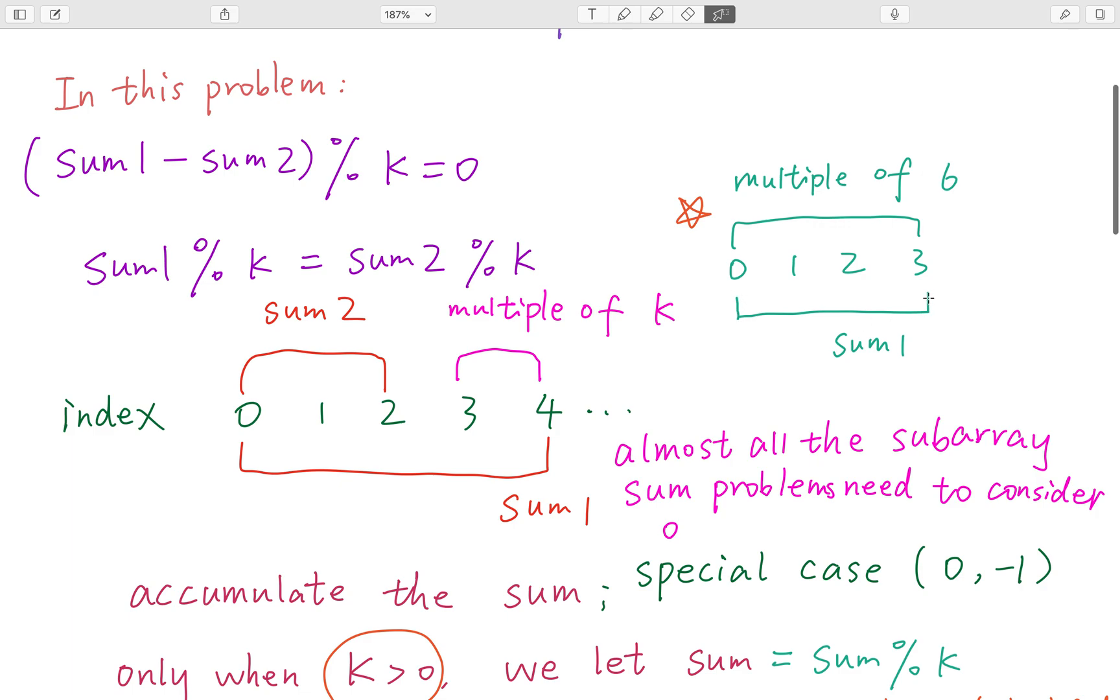There are some details we need to handle. What if sum1 is the whole array and sum2 doesn't exist? That's why we should handle the special case of zero. When sum1 is the whole array, sum2 is actually zero. For example, if the array sum equals six and six is a multiple of six, we need to subtract zero.